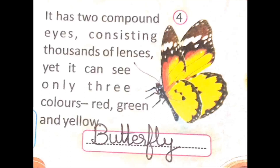Now look at the fourth picture. It has two compound eyes consisting thousands of lenses, yet it can see only three colors: red, green and yellow. Thousands of lenses hone ke baad bhi, yet it can see only three colors - red, green and yellow. The correct answer is butterfly. B-U-T-T-E-R-F-L-Y.